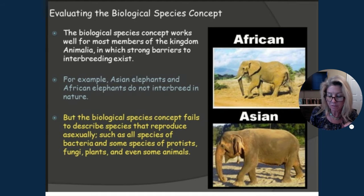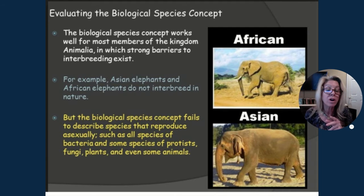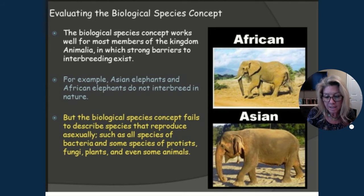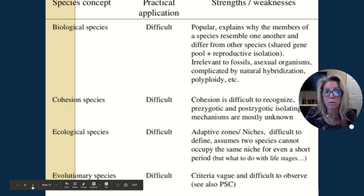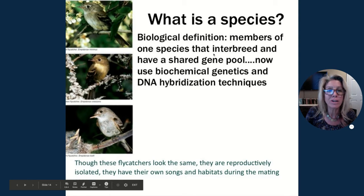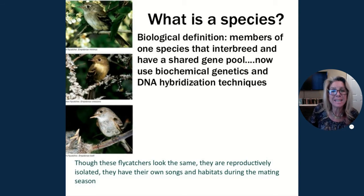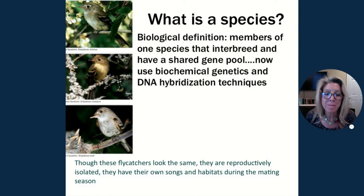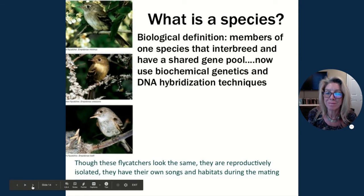Reproductive isolation is defined as physiological, behavioral, and genetic processes that inhibit interbreeding. The biological species concept relies primarily on reproductive isolation to identify different species — lack of gene flow. Disadvantages: it cannot always be tested in nature and cannot be applied to asexual organisms. Just because organisms look similar or share a habitat doesn't mean they are the same species.